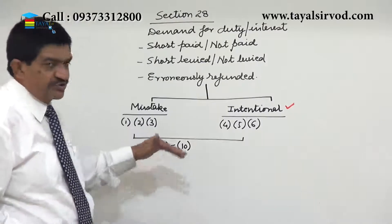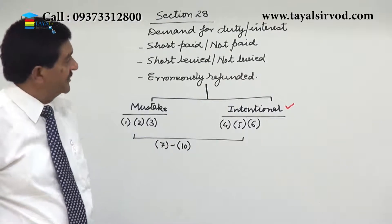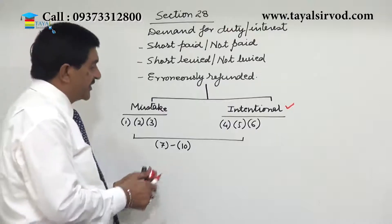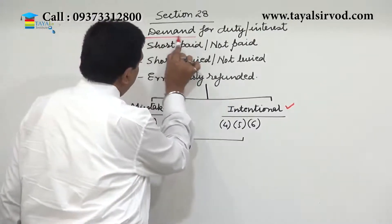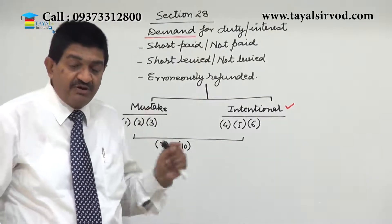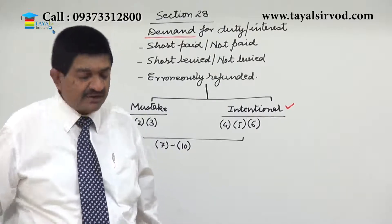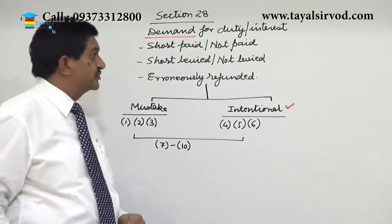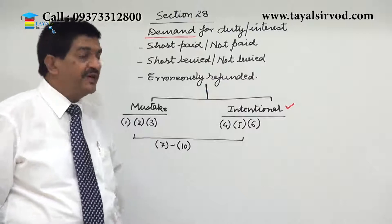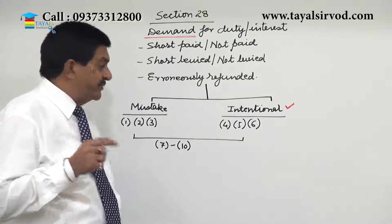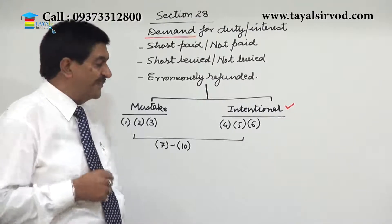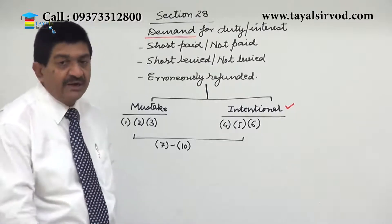The title is 'Demand' — not recovery. The question of recovery comes when the liability has been decided and the person liable to pay fails to pay. Here, the question is about determination of the liability itself — that's why the title is 'Demand.' So demand for duty or interest: short paid, not paid, short levied, not levied, or erroneously refunded. If it is because of mistake, subsections 1, 2, and 3 apply. If it is a case of intention, subsections 4, 5, and 6 apply. Subsections 7 to 10 are common.